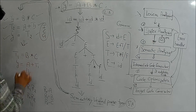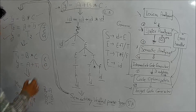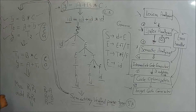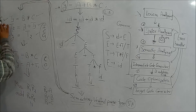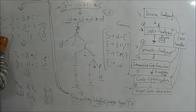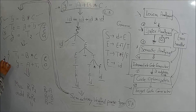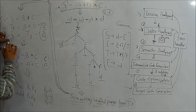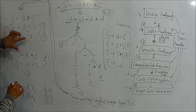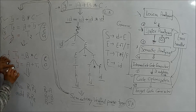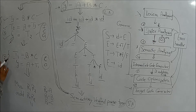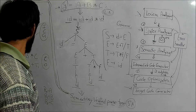After the intermediate code generator, we have the code optimizer. The code optimizer takes the code generated by the intermediate code generator and optimizes the lines. It checks whether the same function can be performed with fewer lines — for example, reducing three lines to two lines by substituting T1 directly, thereby reducing the number of lines.